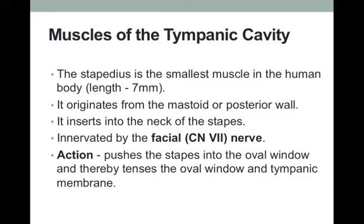As an audiologist, during a physical examination of the ear, you would directly assess the intactness of these nerves by asking the person to smile and looking at the symmetry of the facial muscles. The stapedius muscle, when activated by the seventh cranial nerve or facial nerve, pushes the stapes into the oval window, tensing the ossicular chain, which plays an important protective role.